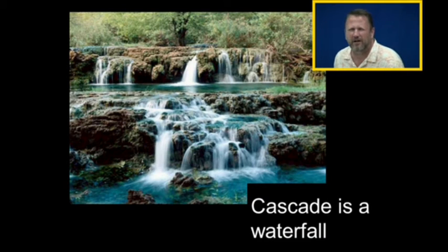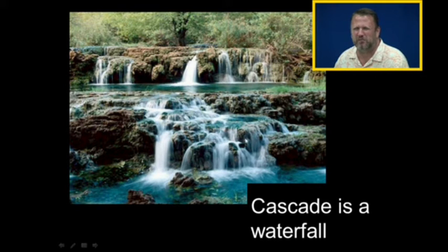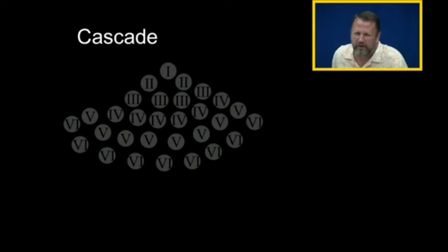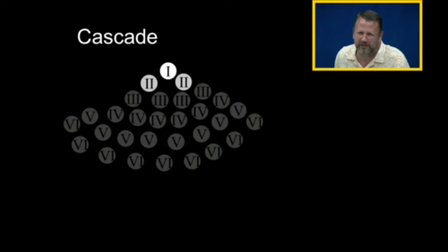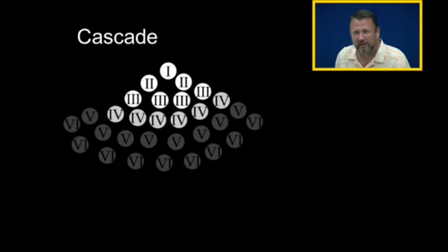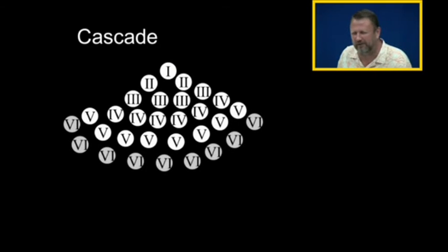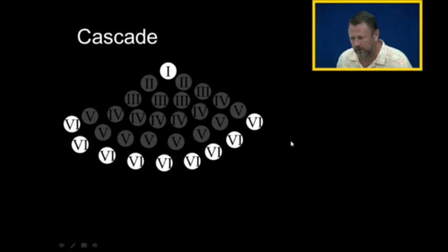A cascade is a waterfall. Notice when the water hits here, it splits up into several different directions. When the water hits there, it splits up into several different directions, and that's what a cascade is. Now it would be very simple if one activated two, which activates three, which activates four, which activates five, which activates six, which activates seven and eight and nine. But it doesn't work that way. This is just to show you what a cascade is.